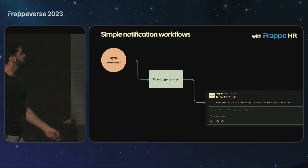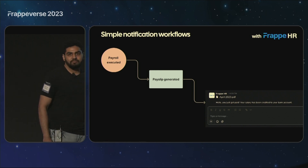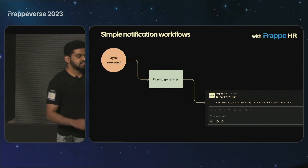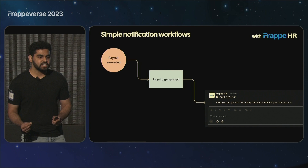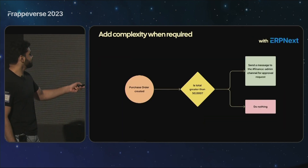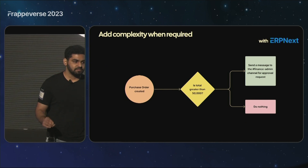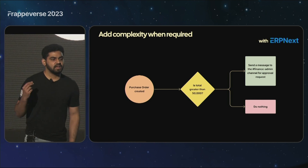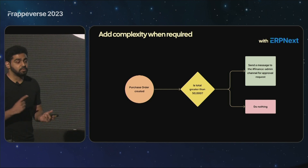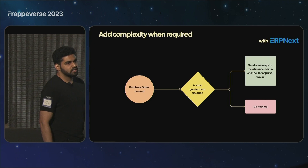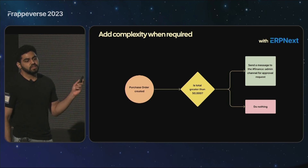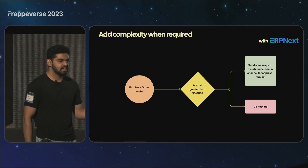Here's a simple notification workflow. Consider that you're using Frappe HR for payroll disbursement — I've heard it's five times faster now. You can set up an integration such that when a payslip is generated, it will be automatically sent to the payee with an accompanying message in the Raven app. You can also add more complexity by adding conditions on document fields from the UI itself — for example, if a purchase order in ERPNext exceeds a certain amount, a message will be sent on a finance admin channel requesting approval.